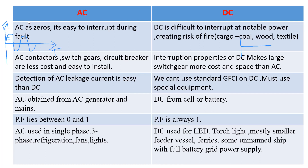In DC, short circuit and fault current are very high, and there is no zero potential to help quench the arc. This can produce sparks or arcing, creating a risk of fire — especially when the ship carries combustible cargo like coal, wood, or textile. Extra precautions must be taken to protect such cargo. AC switch gear interruption is less costly and easier to install, and detecting AC leakage currents and balancing faults is also easier.